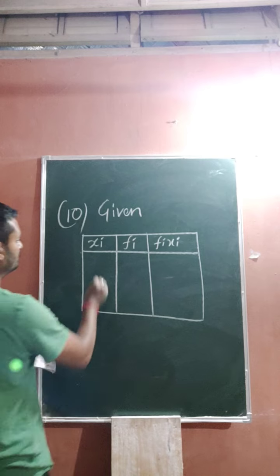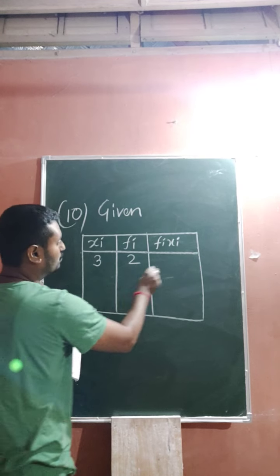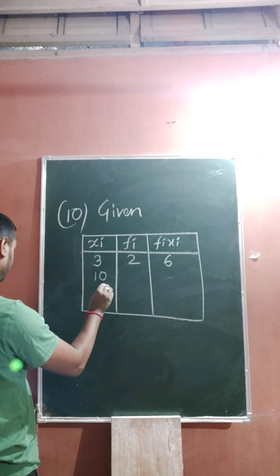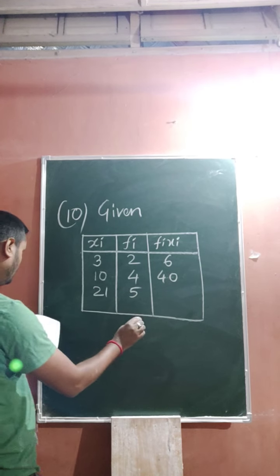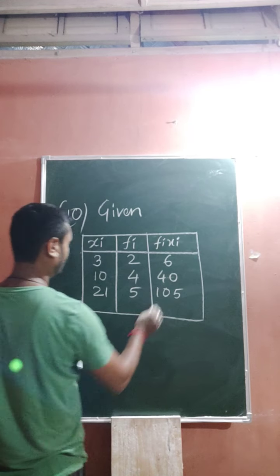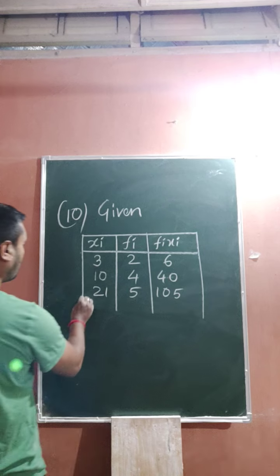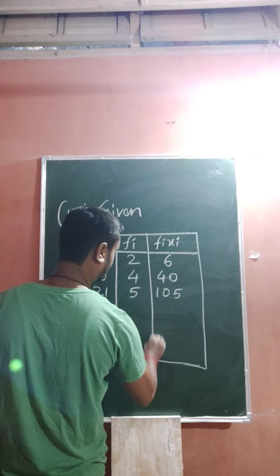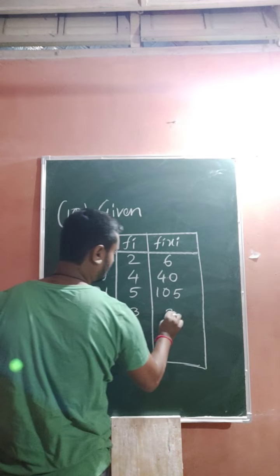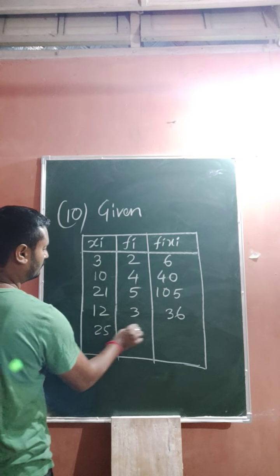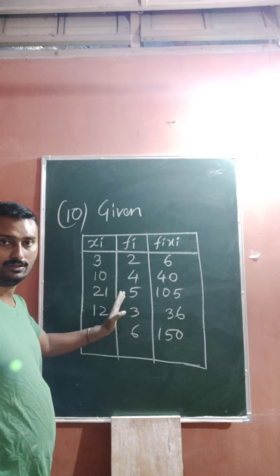So the first value of x is 3 and f is 2, so multiply: 3 into 2 equals 6. Next, x is 10 and f is 4, so 10 into 4 equals 40. Next, x is 21 and f is 5, so 21 into 5 equals 105. Next, x is 12 and f is 3, so 12 into 3 equals 36. And x is 25 and f is 6, so 25 into 6 equals 150.